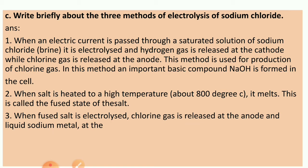C: Write briefly about the three methods of electrolysis of sodium chloride. When an electric current is passed through a saturated solution of sodium chloride, it is electrolyzed: hydrogen gas is released at the cathode while chlorine gas is released at the anode. This method is used for the production of chlorine gas, and an important basic compound NaOH is formed in the cell. When salt is heated to high temperature it melts — this is called fused salt. When fused salt is electrolyzed, chlorine gas is released at the anode and liquid sodium metal at the cathode.